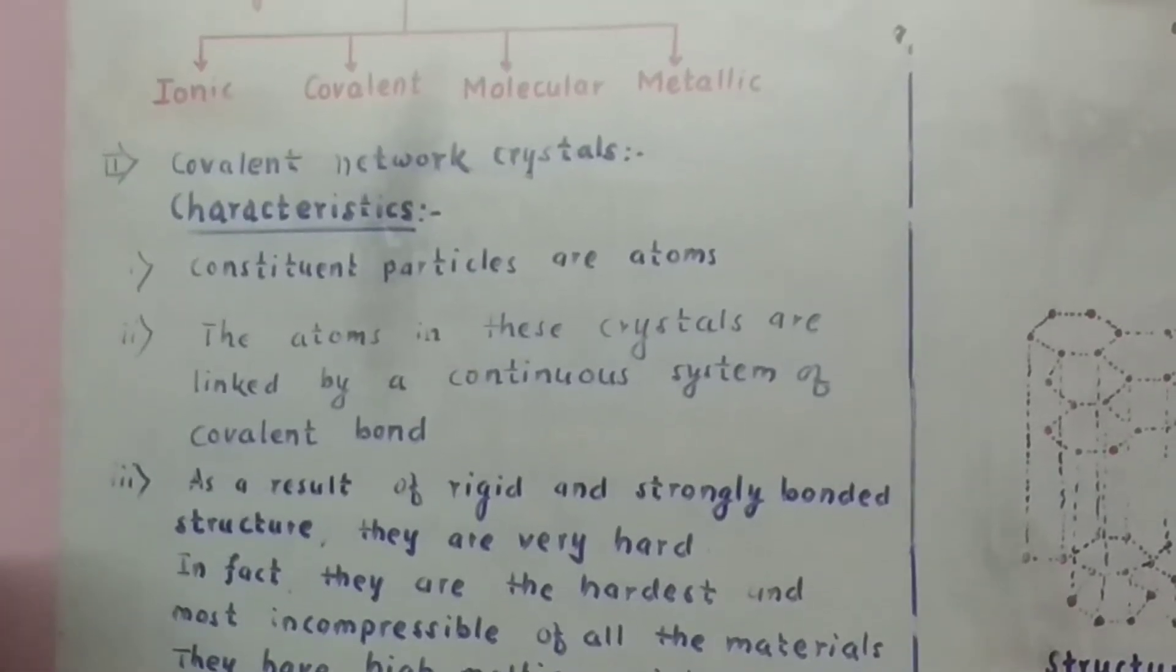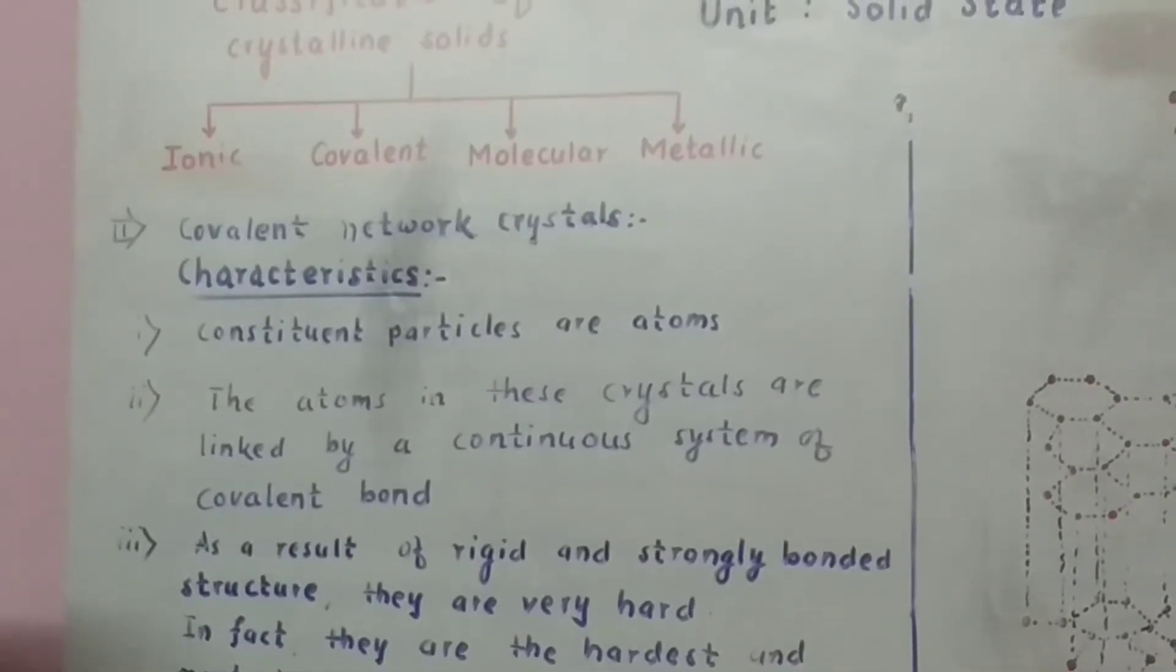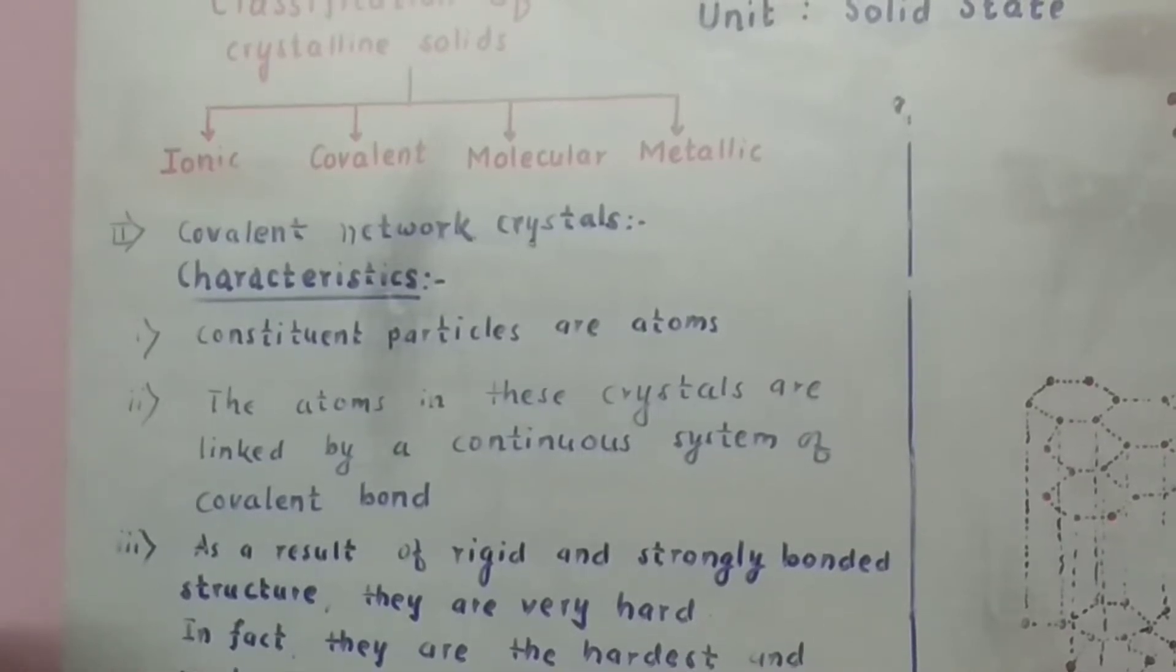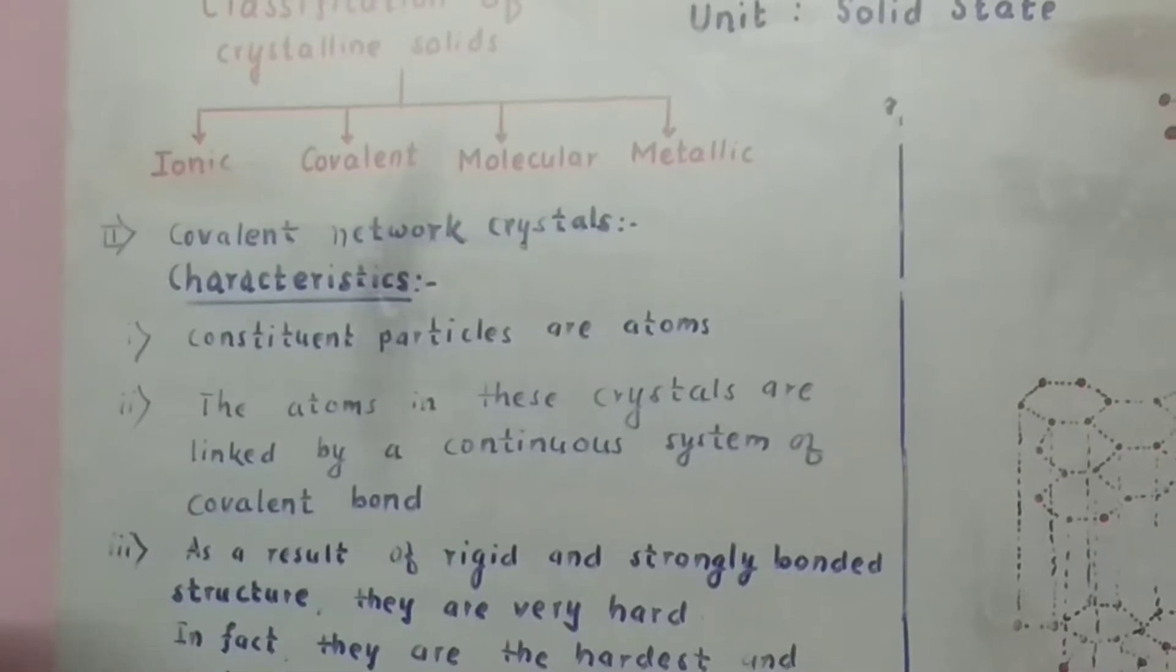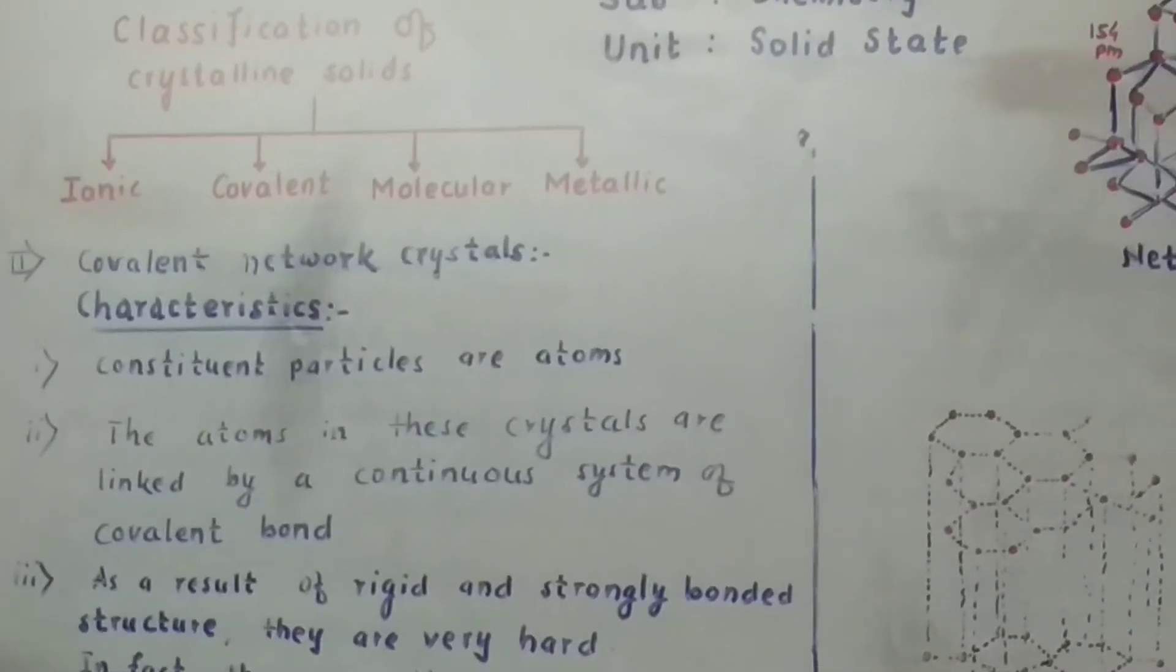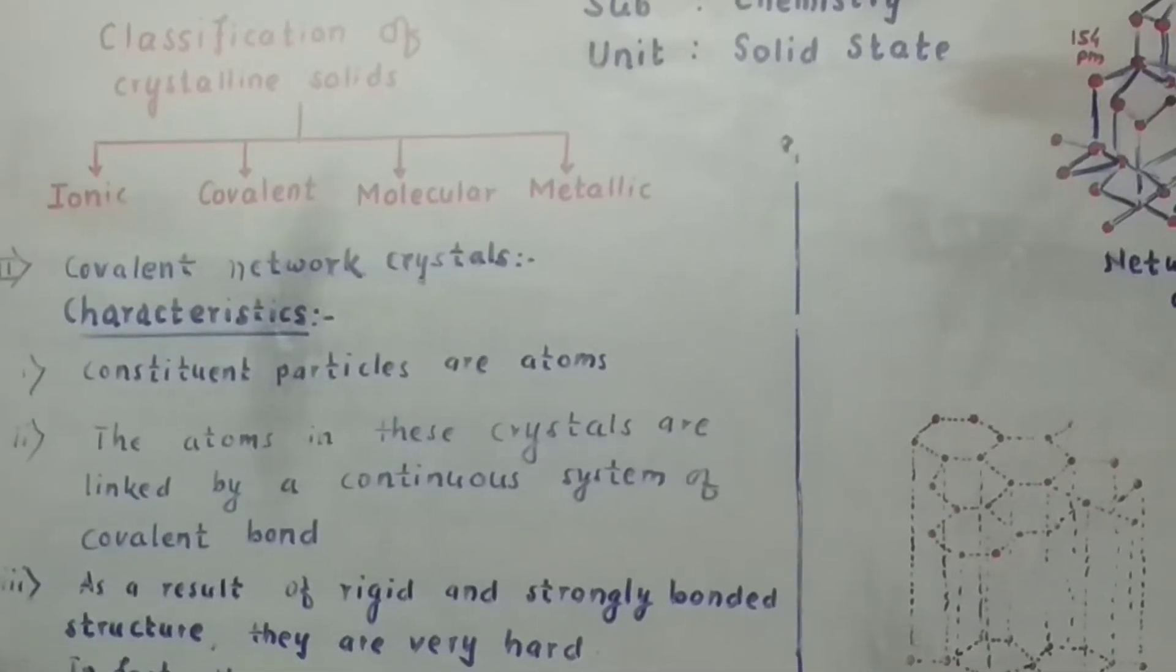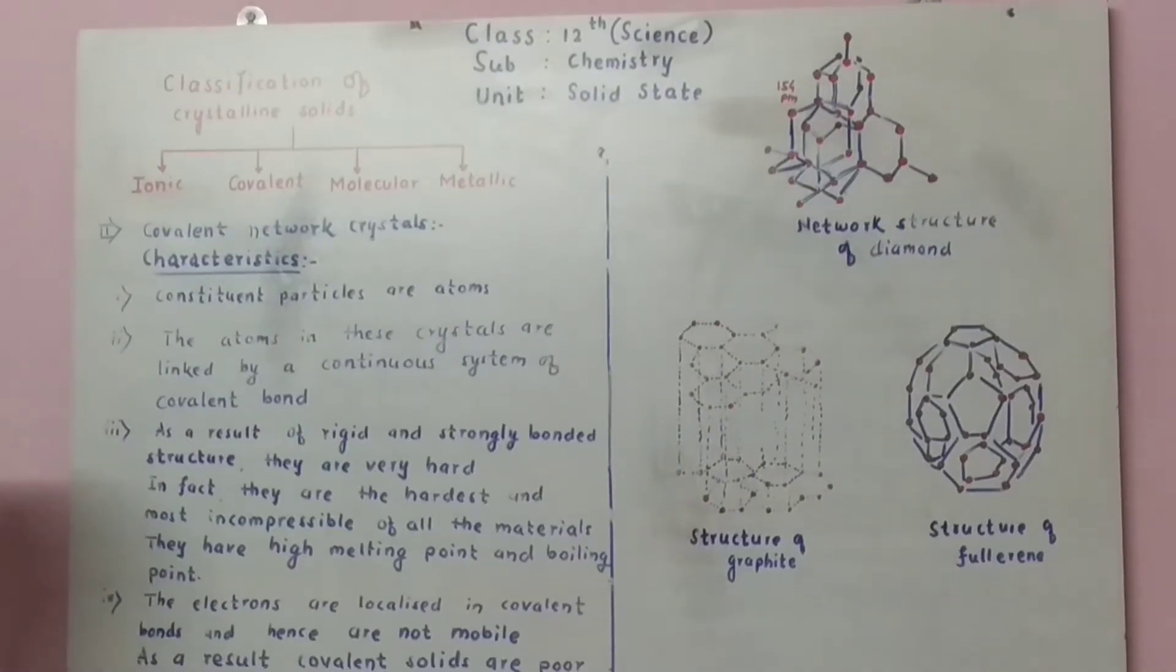The solids in which constituent particles are atoms which are linked to each other by covalent bond to form continuous system or network of covalent bond having a large giant three-dimensional structure. They are also called giant solids.